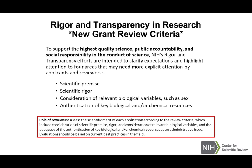What does NIH think about this? The authentication of key biological and/or chemical resources is one of the main things that reviewers are supposed to evaluate when reviewing grants. Since 2016 or 2017, reviewers are asked to look at the scientific premise, rigor, consideration of relevant biological variables such as sex, and authentication of key biological and chemical resources — such as antibodies, cell lines, and transgenic organisms.